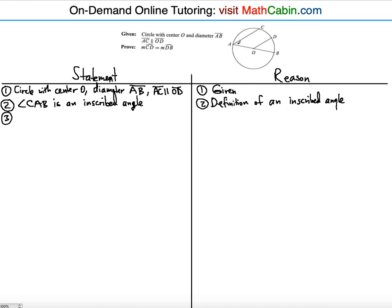Since the diameter is a straight line segment, and CA and OD are parallel, you can immediately see that angle CAB and angle DOB are corresponding angles — they occupy the same position.